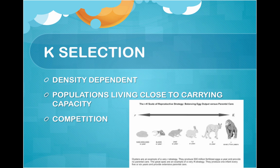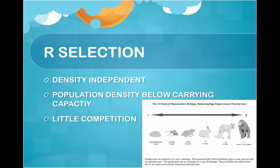K selection is density-dependent selection. Populations living close to carrying capacity are considered K selection — a lot of competition exists. For example, mature trees in an old-growth forest. R selection is density-independent selection, where population density is well below carrying capacity and there is little competition. For example, weeds growing in an abandoned farm field.